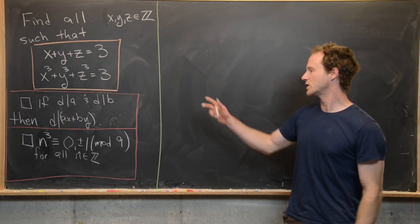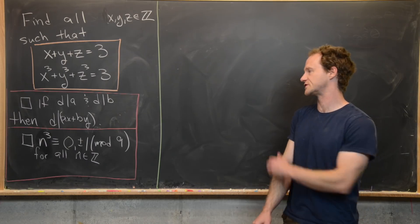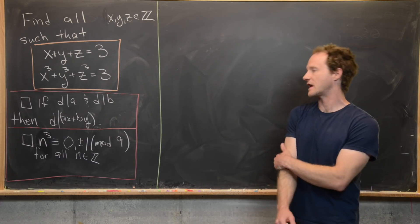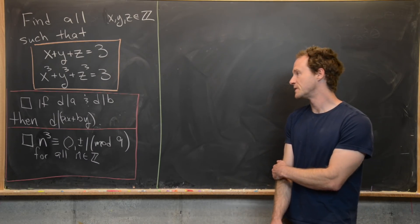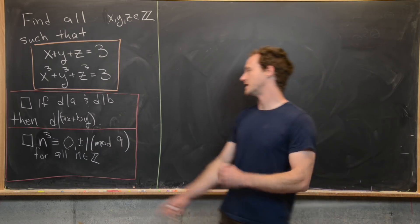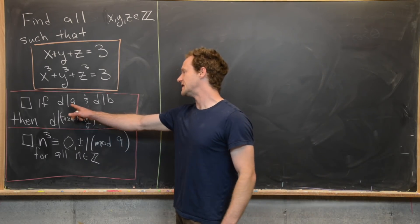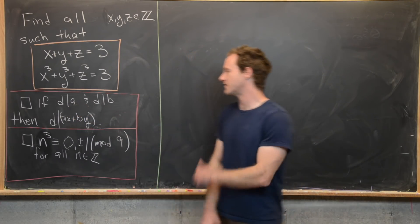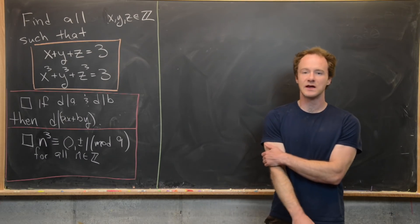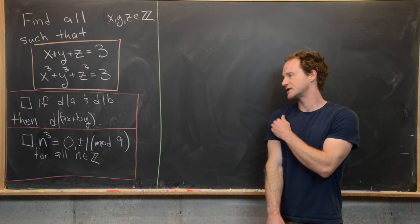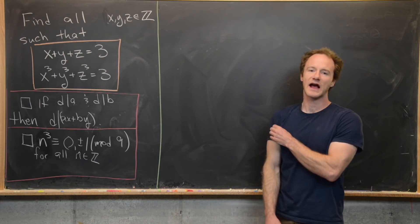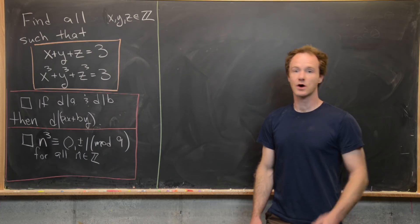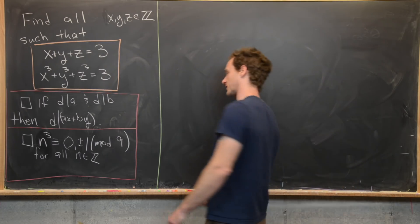We're going to use two tools to solve this, and they're both fairly elementary but we will check them. The first is: if d divides a and d divides b, then d divides ax plus by, where x and y are any integers.